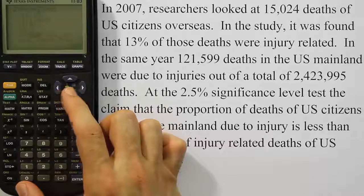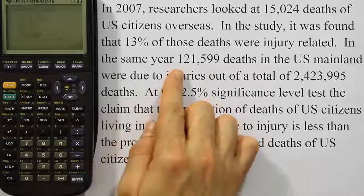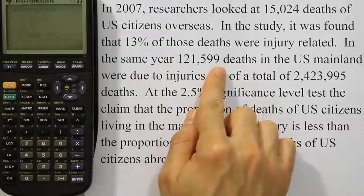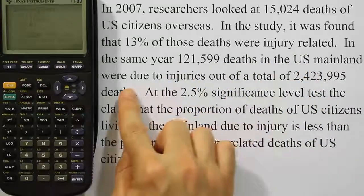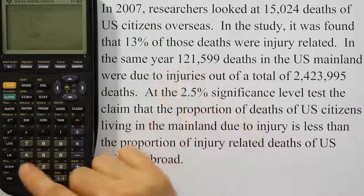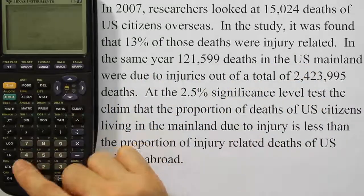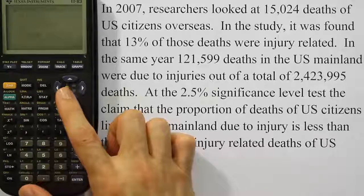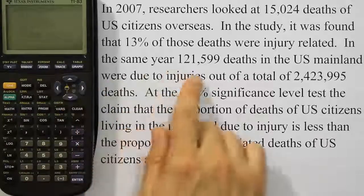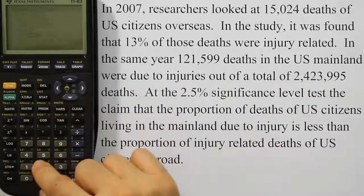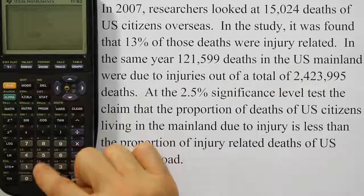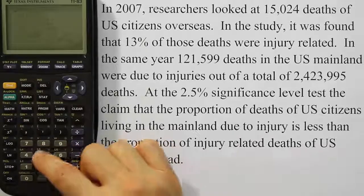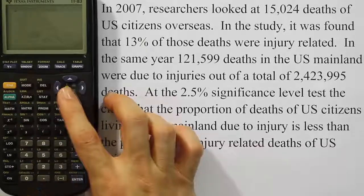For the second set of data, we already have the x value: 121,599 deaths in the US mainland were due to injuries, out of a total of 2,423,995 deaths. So I type those in for x2 and n2.